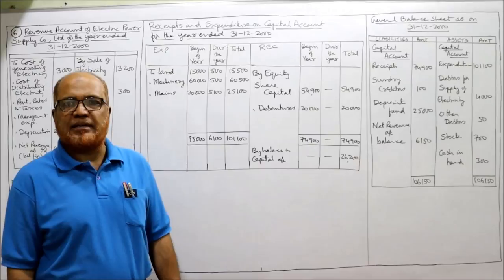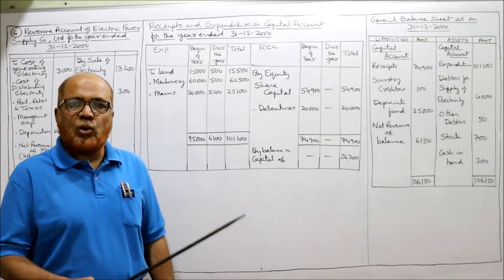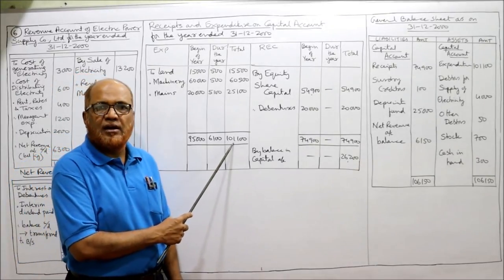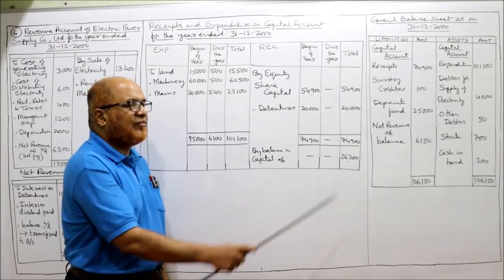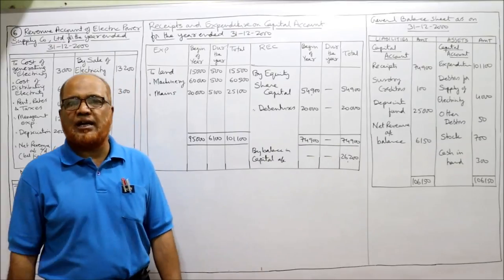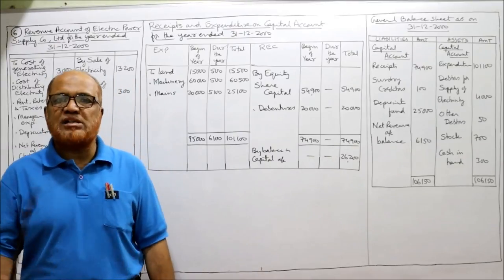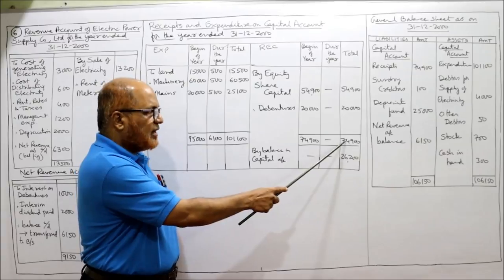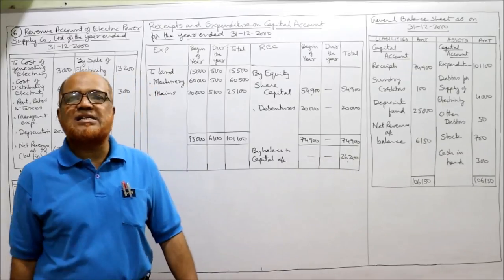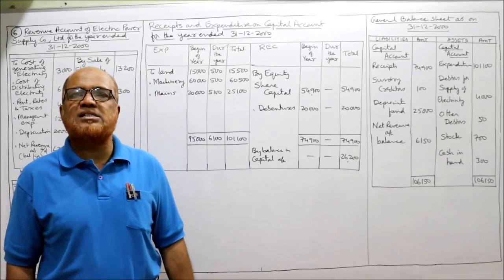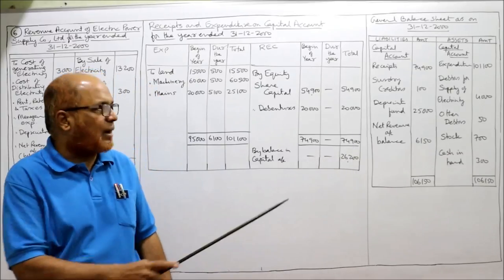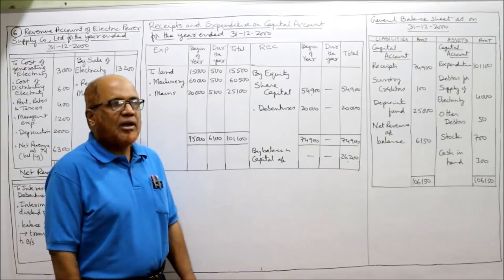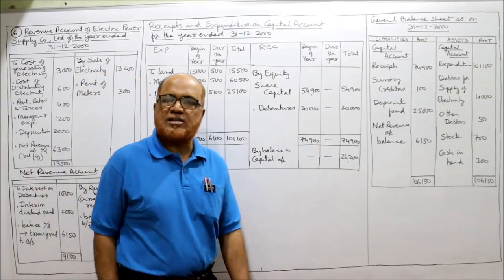Total expenditure is 1,01,100, while total receipts is 74,900. The balance in the capital account is 1,01,100 minus 74,900 equals 26,200. This is internal information only. Now we come to the general balance sheet as of 31st December 2000. Capital account: receipts total (74,900) on the liability side, and expenditure total (1,01,100) on the asset side.